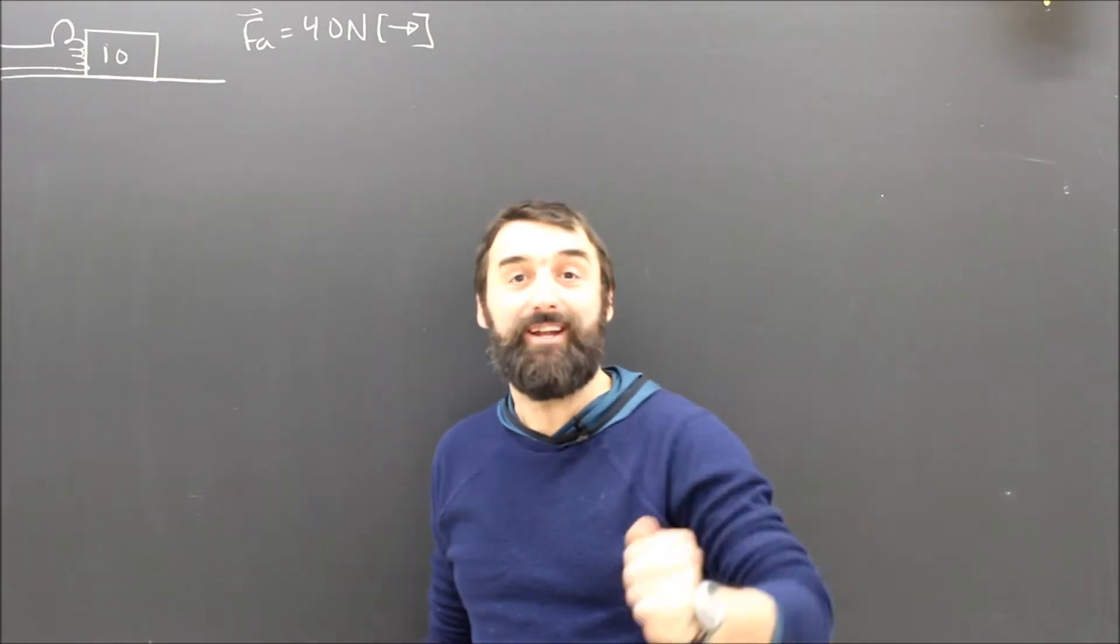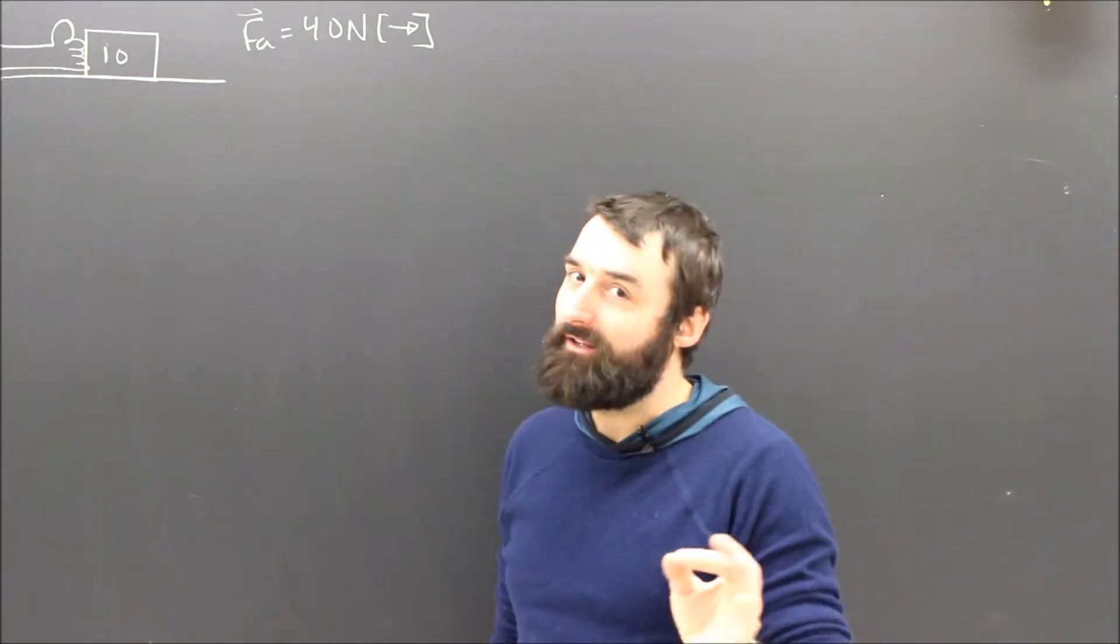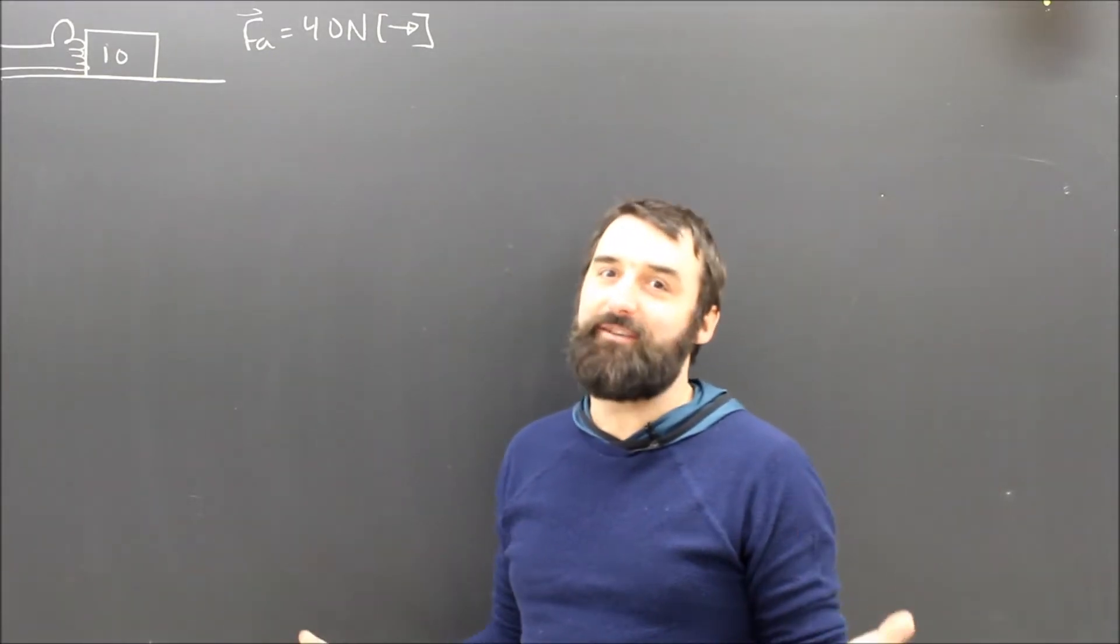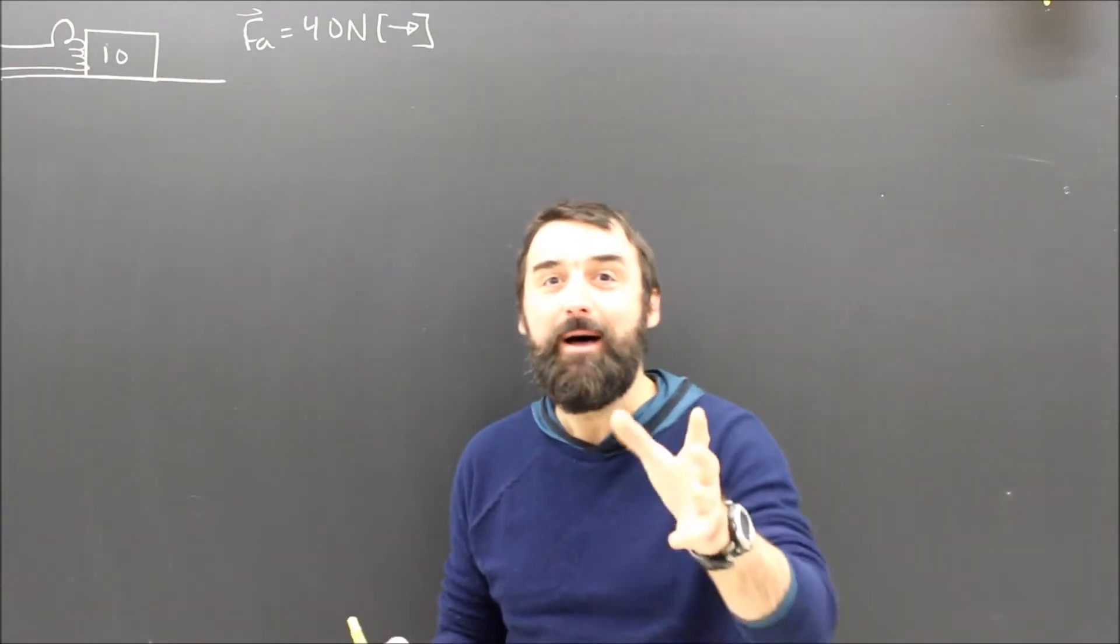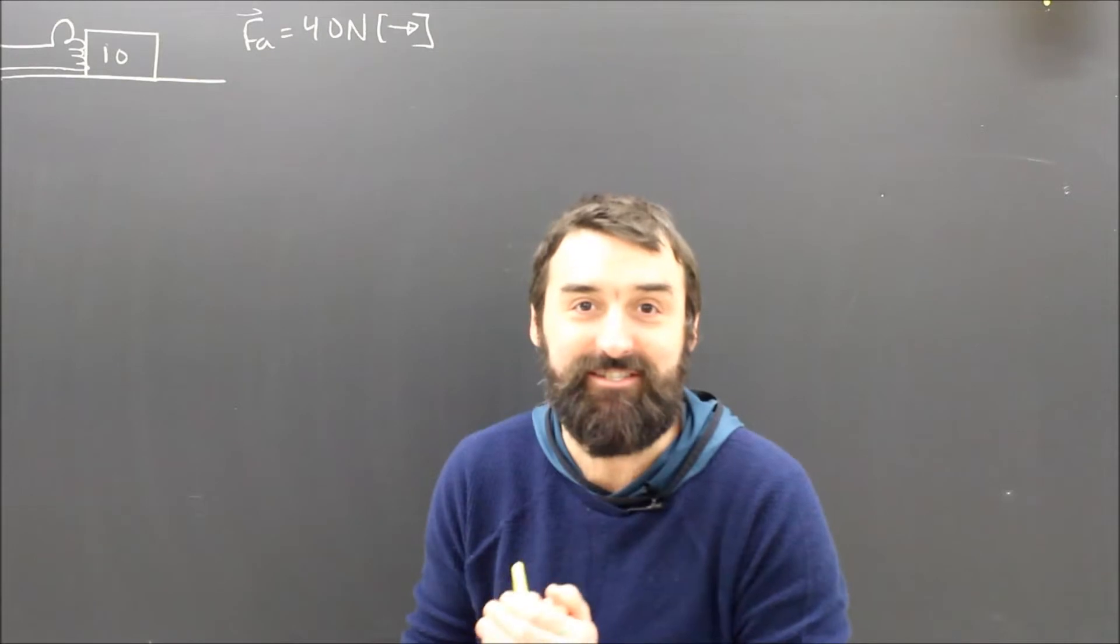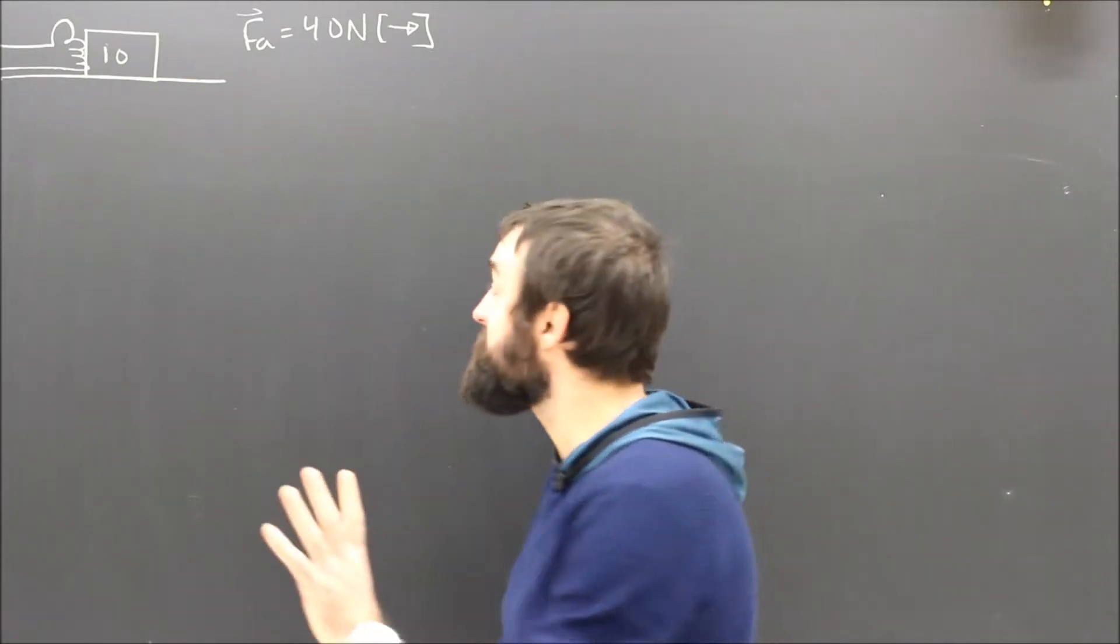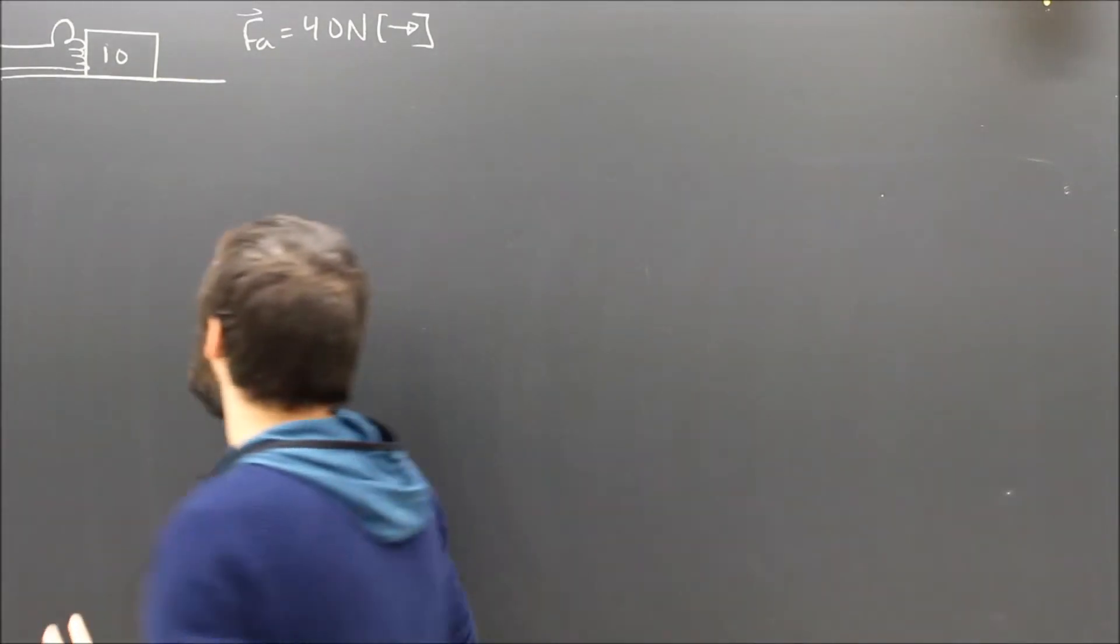And this time the object goes at a constant speed. Constant speed, uniform motion, acceleration is zero. Super easy, Newton's first law. But I'm still going to follow the steps my physics teacher has been desperately trying to teach me. So I'm going to draw a nice big free body diagram.